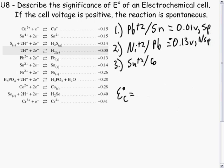For our last reaction, we have tin plus 2 and cobalt downhill, so I predict it would be spontaneous.